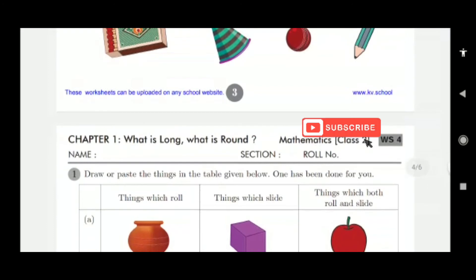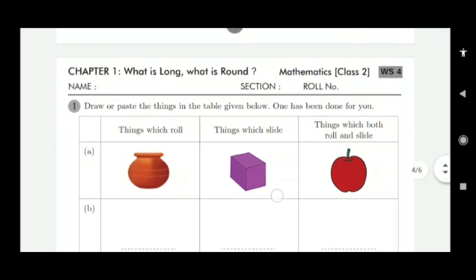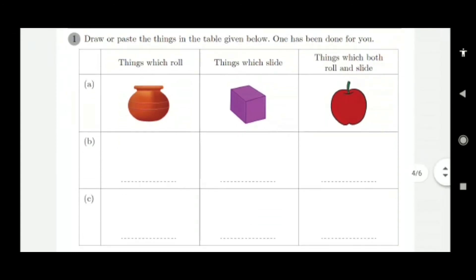This is worksheet 4 of mathematics, chapter 1 — what is long and what is round? Draw or paste things in the table given below. One has been done for you. The categories are: things which roll, things which slide, and things which both roll and slide.